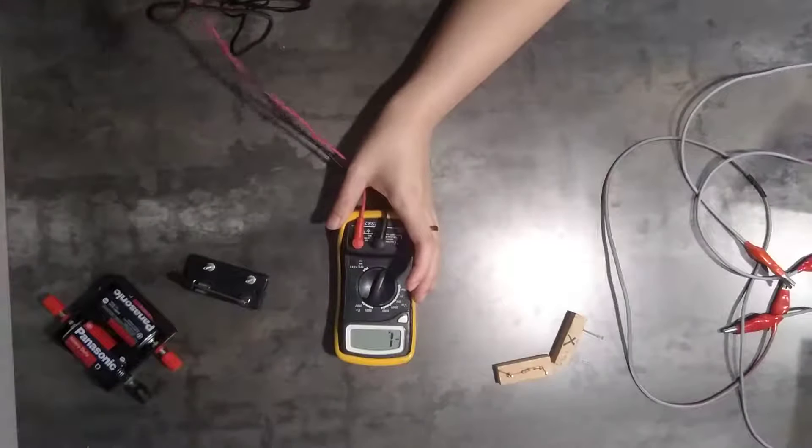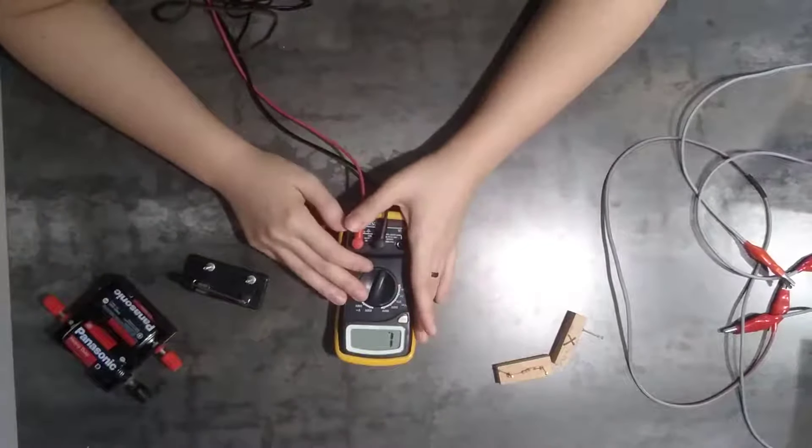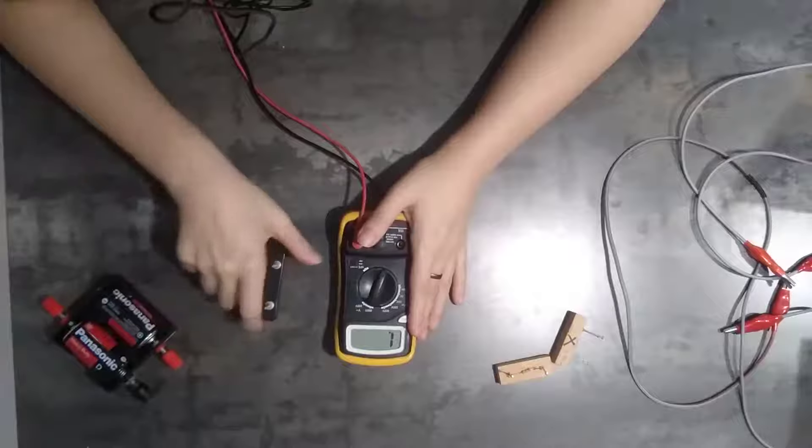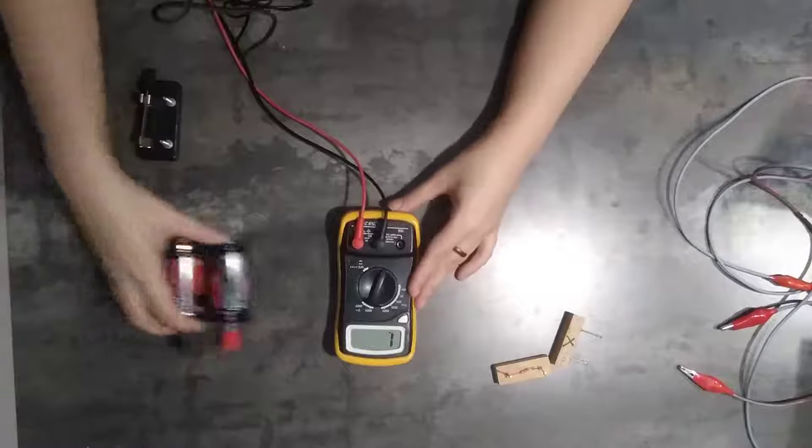So this is the first overview video about the circuits. Mainly, how to use the multimeter to help you check all your circuit components. For example, battery. First thing, check this tool.